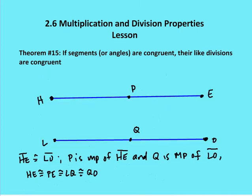For theorem 15, we say if segments or angles are congruent, then their like divisions are congruent. So in the prior slide, we talked about like multiples. In this case, we're talking about like divisions. And again, it holds true as well. We can cut each of the segments into half or thirds or quarters. It doesn't matter. All we have to say is that their like divisions are congruent.